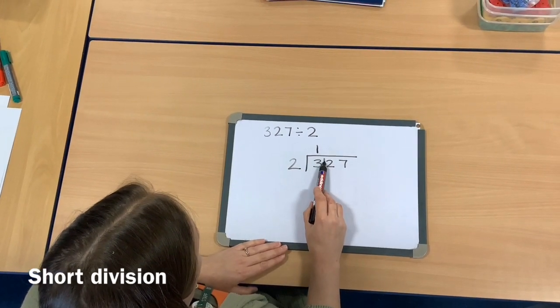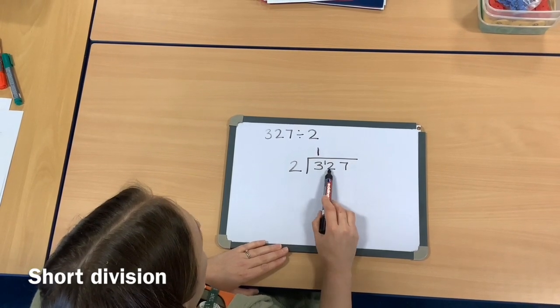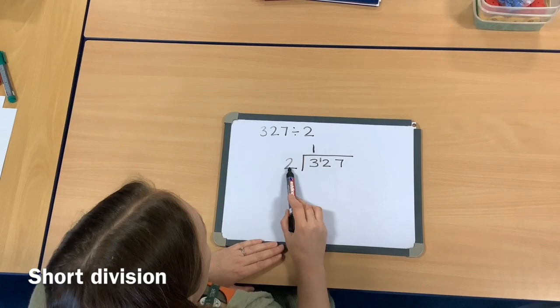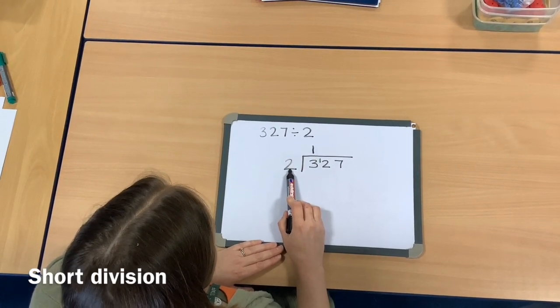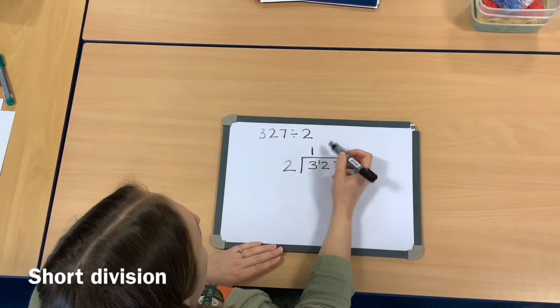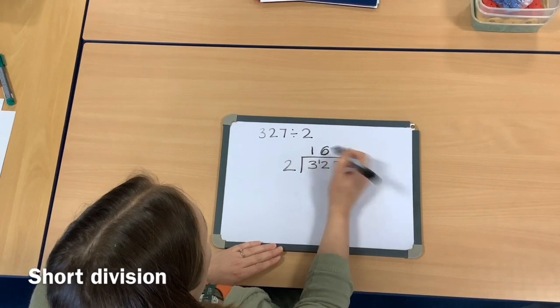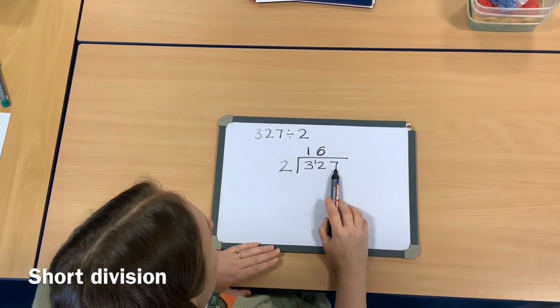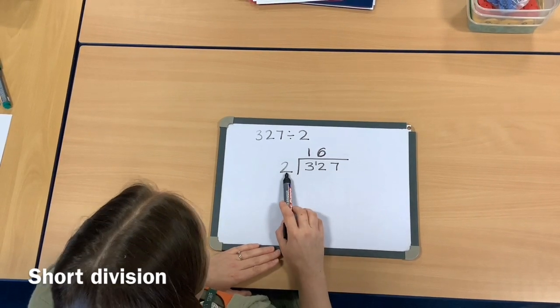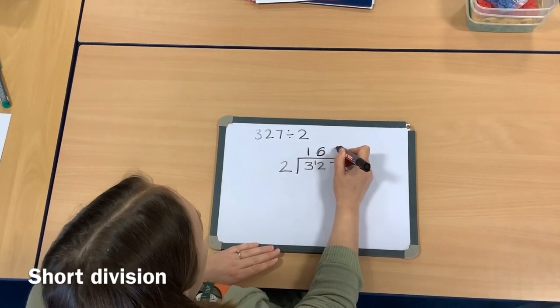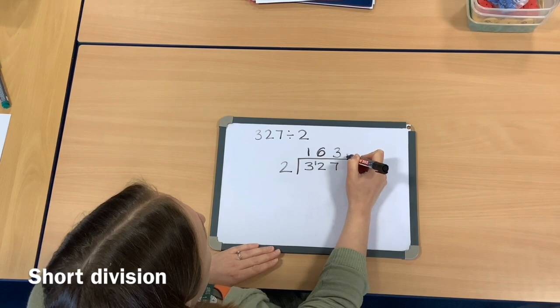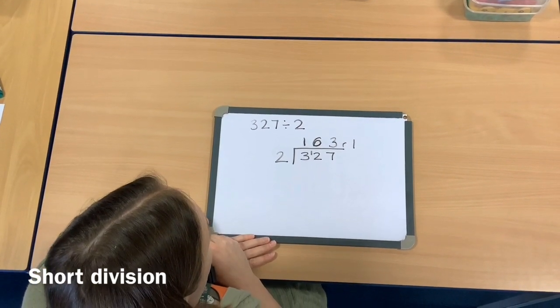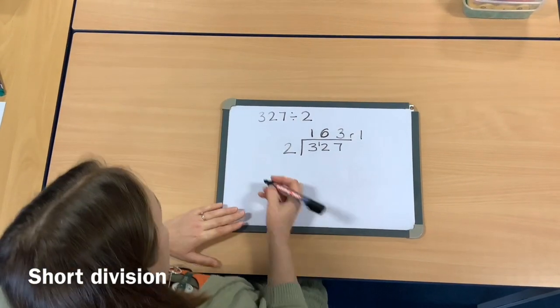Now I move on to my tens. I've got 12 tens there. I need to split it into 2 equal groups, which I can do—there will be 6 in each group. Now I move on to my ones. I've got 7 ones. If I want to split that into 2 equal groups, there's going to be 3 in each group and then there's going to be 1 left. It gives you the answer 163 remainder 1.